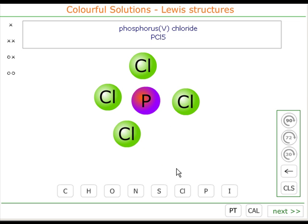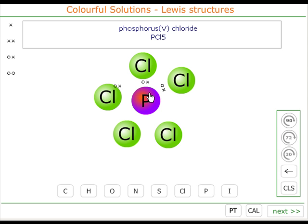Now each of these bonds must be a shared pair of electrons. So we will share a pair of electrons between each phosphorus and each chlorine, like so.